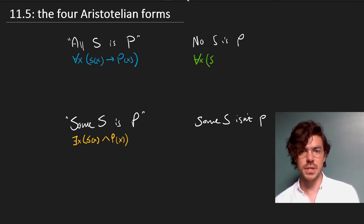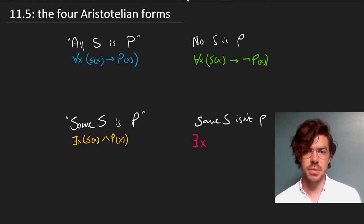We represent 'no S is P' as: for all x, if x is an S then x is not a P. Lastly, we represent 'some S isn't P' as: there exists an x which is S and not P.